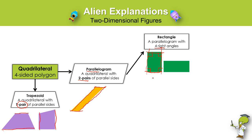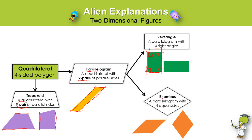There is another special type of parallelogram that has to do with its side lengths, and that is the rhombus. A rhombus is a special parallelogram that has four equal sides. So all of the side lengths are the same, and it still has its two pairs of parallel sides — there's one set of parallel lines and here's another set.